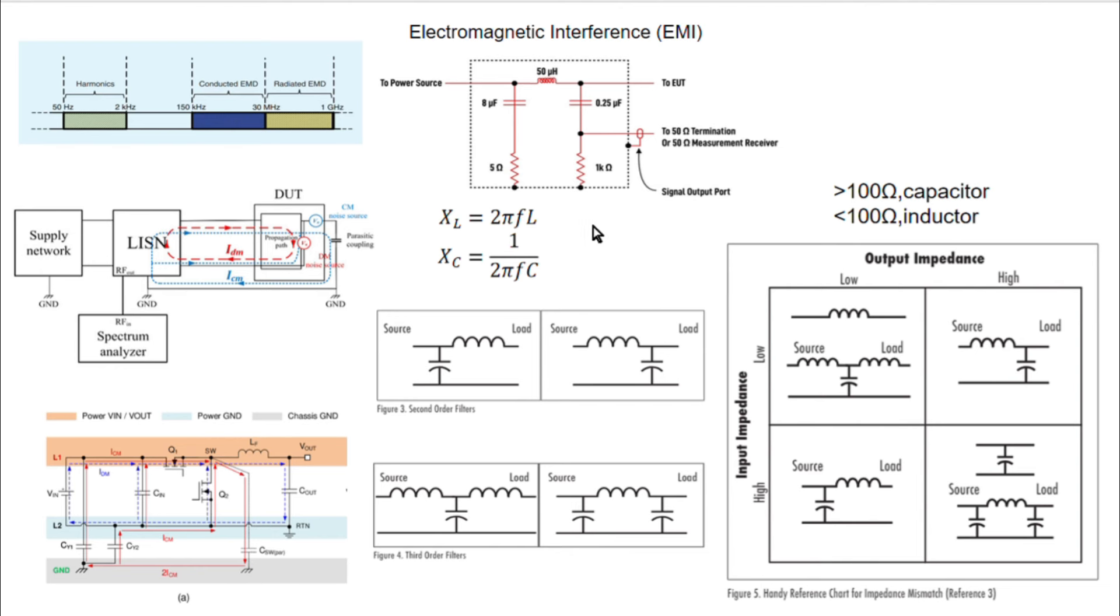To achieve bigger attenuation, we need a second-order filter. They have two passive components. This filter is sometimes called an L filter. We have to consider filter resonance and damping.